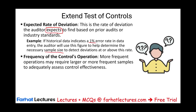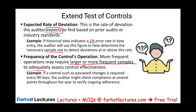The frequency of the control also matters. More frequent controls may require larger or more frequent samples because the control is happening more often, and you need to select more to be comfortable with the results and adequately assess effectiveness. For example, if a control such as password changes is required every 90 days, the auditor might check compliance at several points throughout the year to verify ongoing adherence.